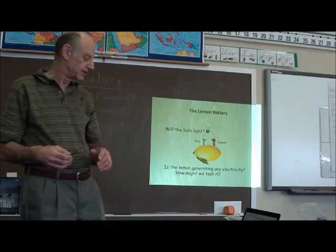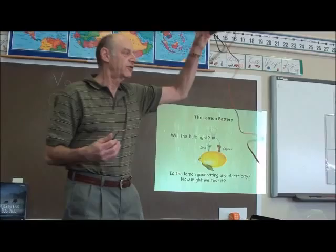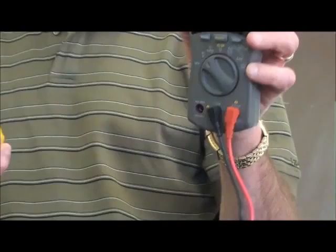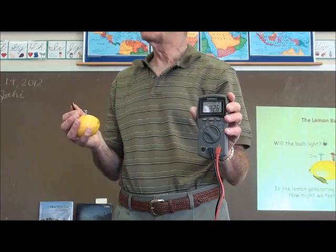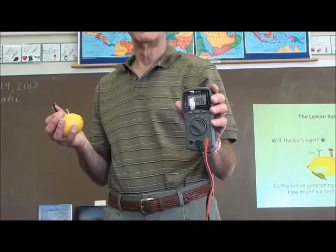That's when I pull out my meter. Instead of the light bulb, I connect my voltmeter to the lemon battery. It typically shows right around one volt, or nine-tenths of a volt. That's why we have one and a half volt batteries — these bulbs won't light with just one volt.